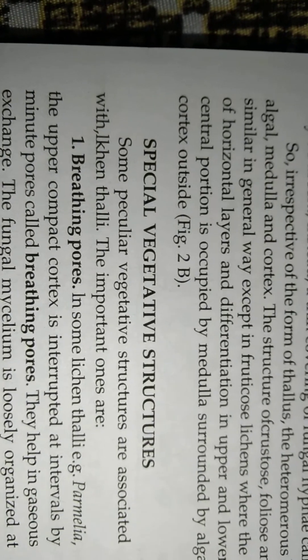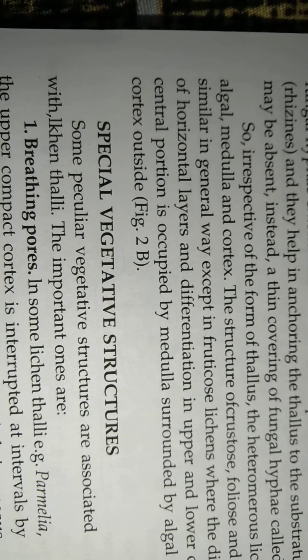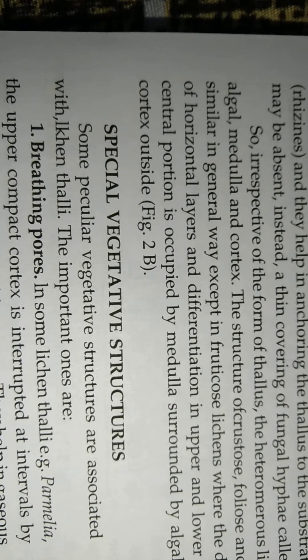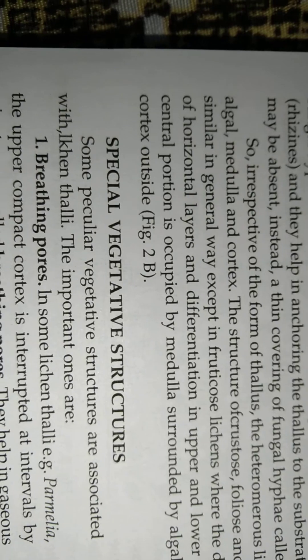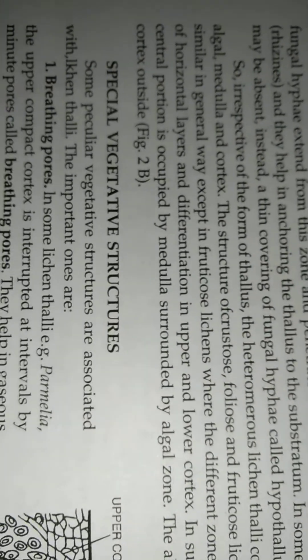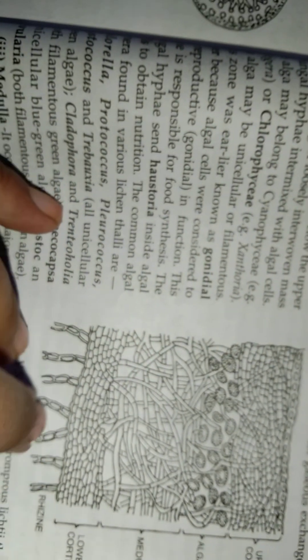The structures of crustose, foliose, or fruticose lichen. The whole is more or less similar in the general way except the fruticose lichen, where the different zones are formed of cylinders instead of horizontal layers. This is about the heteromerous thallus.